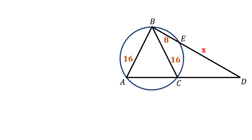First, let's talk about the problem itself. We have a triangle here — triangle ABC — which is an isosceles triangle with two sides of 16. This triangle is inscribed in a circle, and there is also a segment BD, which is split by the circle at point E. The segment BE is 8, and we are asked to find the segment ED.